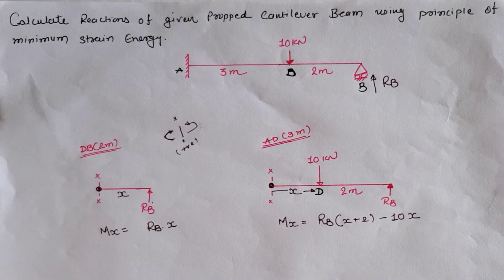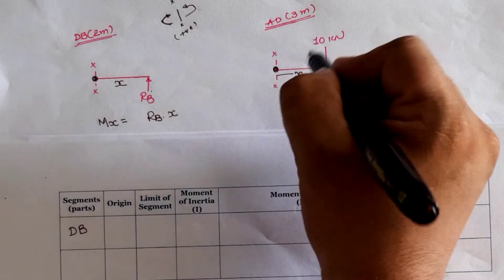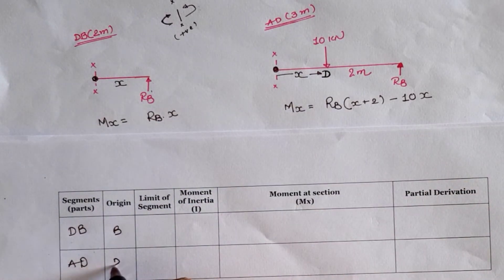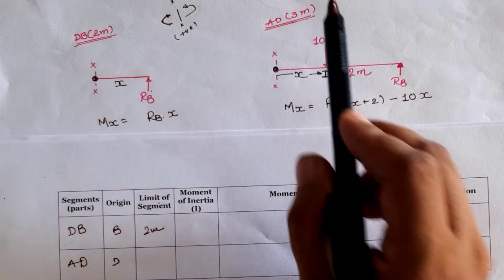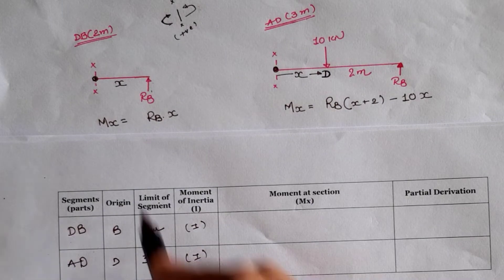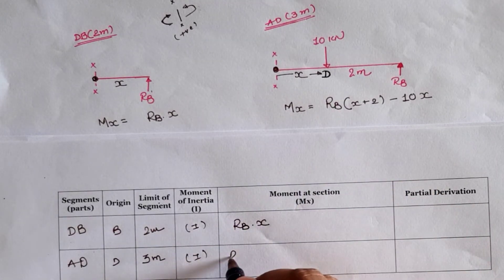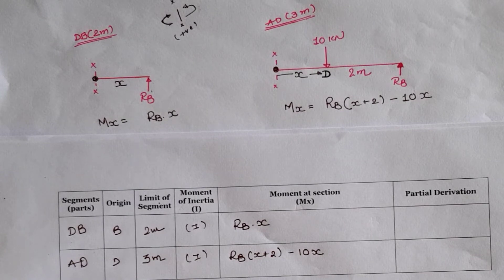Setting up the tabular form of Castigliano's theorem: the first segment is D to B and the second is A to D. The origin for D-to-B is B, and for A-to-D is D. The span limit for D-to-B is 2 meters and for A-to-D is 3 meters. Moment of inertia I is constant. The moment for DB is M = RB·x, and for AD is M = RB(x + 2) − 10x.